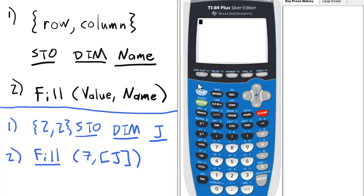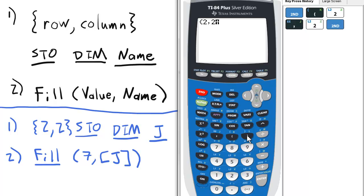First, we need a matrix with the dimensions we want to fill with the value. So to do this, we have to actually use these squiggly line braces. So in this case, I want to make it two by two, so I enter two comma two, close the braces.